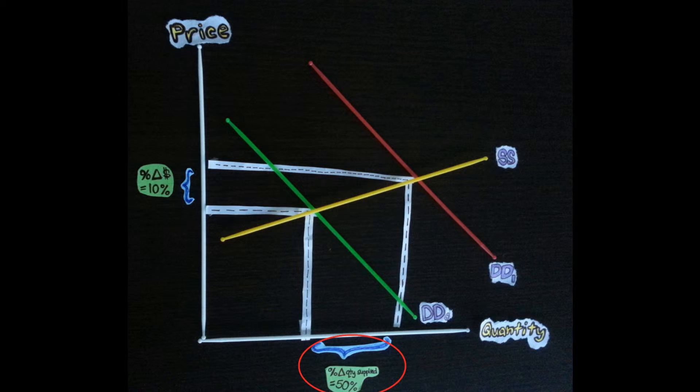Thus, the price elasticity of supply would increase the quantity supplied of margarine to a large extent.